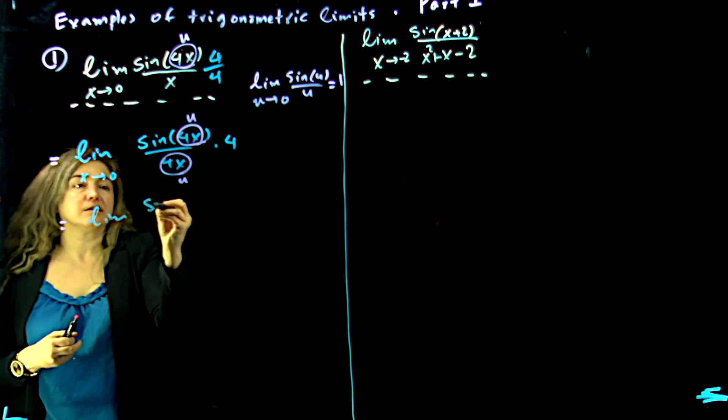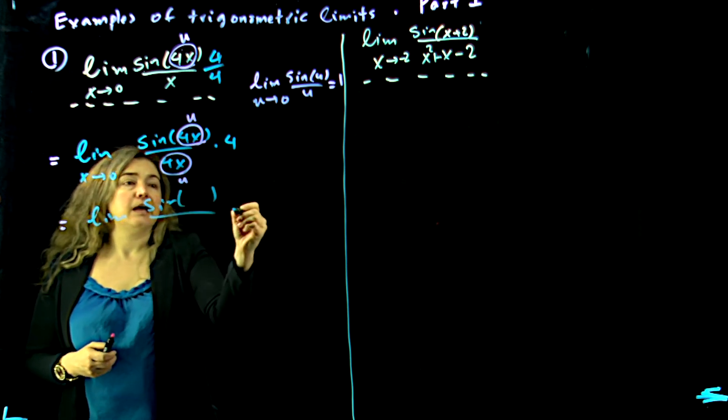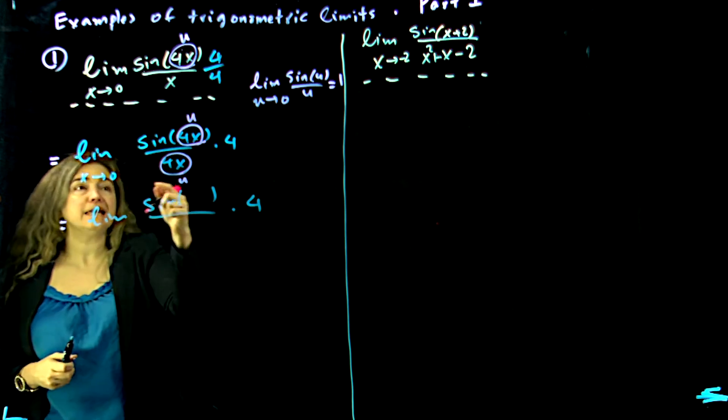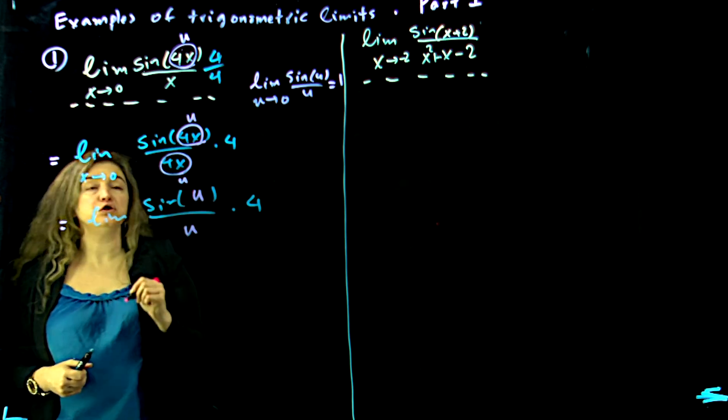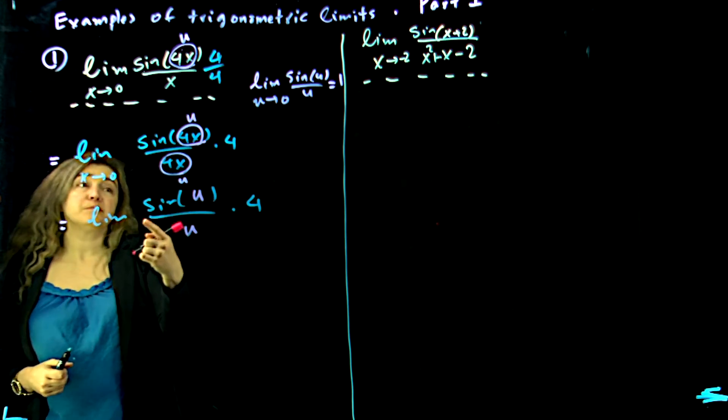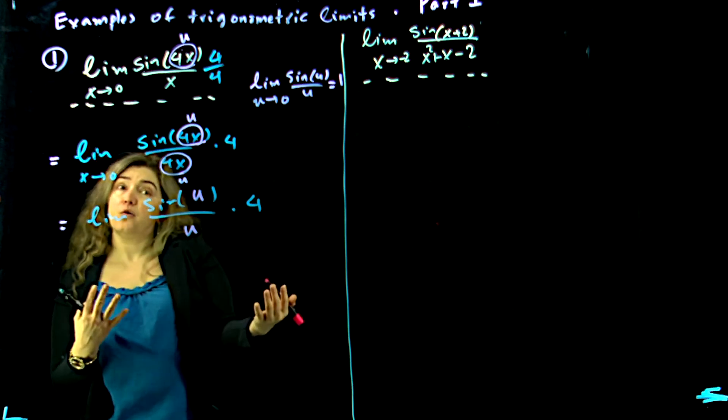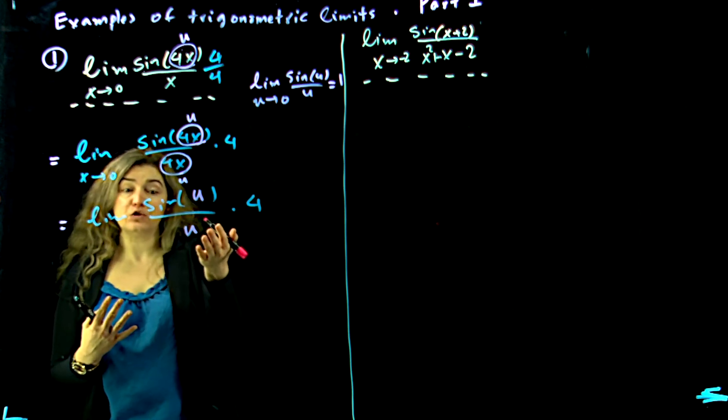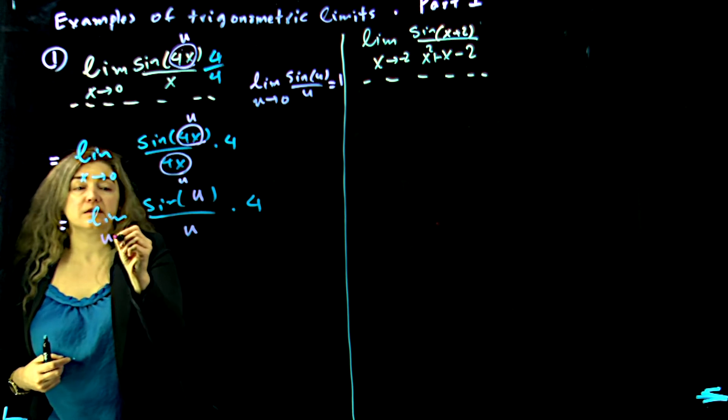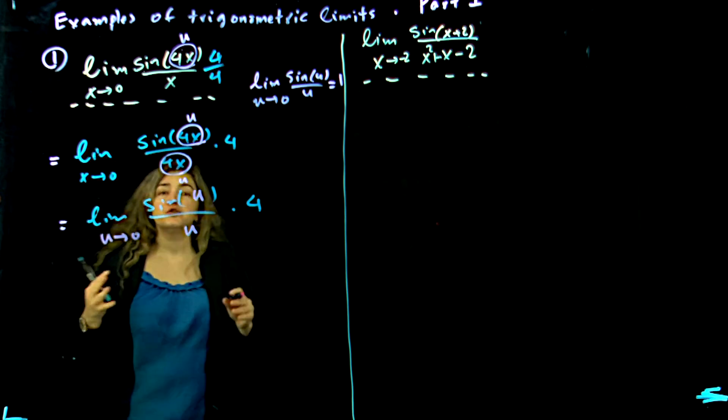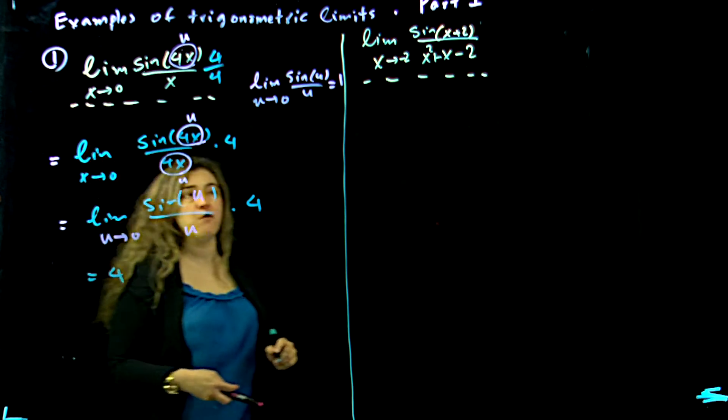Limit as u approaches 0 of sine of u over u times 4. I write u here and I write u here, but if x is approaching 0, where does 4x approach to, which is u? u approaches 0 as well. So now I get the answer to be equal to 4.